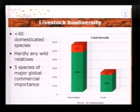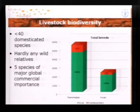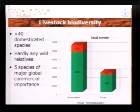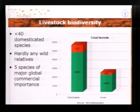As regards biodiversity at the species and breed level, we are dealing with less than 40 domesticated species, and we have hardly any wild species left. Within the agricultural sector, most food is produced by five species that have a global spread.